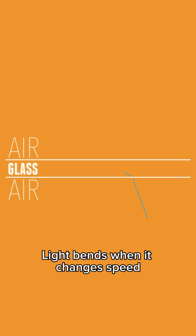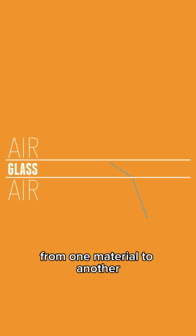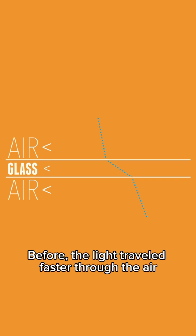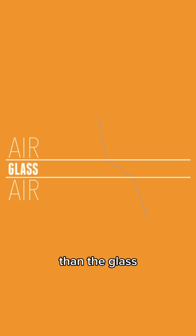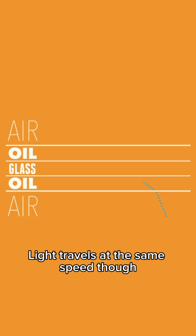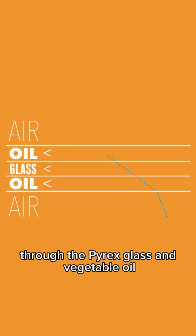Light bends when it changes speed from one material to another. Before, the light traveled faster through the air than the glass, which caused the image to bend. Light travels at the same speed, though, through the Pyrex glass and vegetable oil, which makes the objects basically invisible.